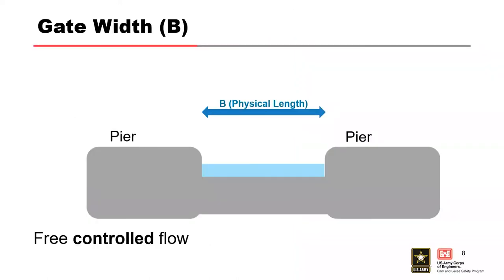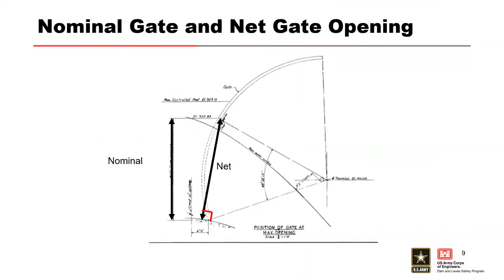When calculating free controlled flow for a gated spillway, the gate width is the physical width of the gate, and the effects of pier and abutment contraction are accounted for in the discharge coefficient. The nominal gate opening is typically reported in the water control manual and in published rating curves because it is easy for operators to implement — it is the vertical distance from the gate seat elevation to the bottom of the gate. The net gate opening, which is what you need for the equation, represents the area perpendicular to the direction of flow passing through the gate opening, and is the minimum distance from the bottom of the gate lip to the spillway crest, measured perpendicular to the crest.